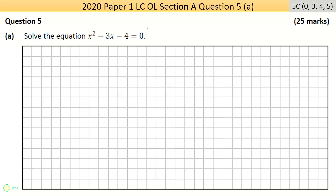Question five is a five-parter — this must have been downgraded in terms of marks. It says solve the equation where it has a quadratic: x squared minus three x minus four equals zero. There are two ways of doing this; one way that will always work is using the quadratic formula.